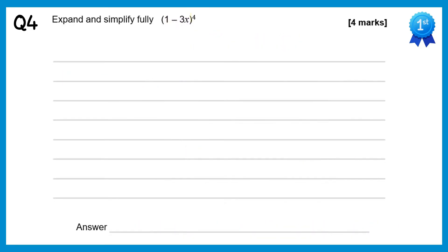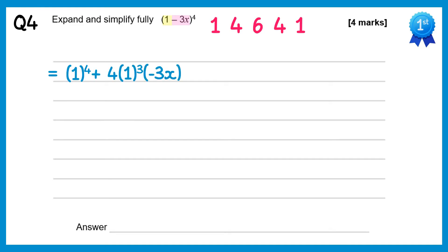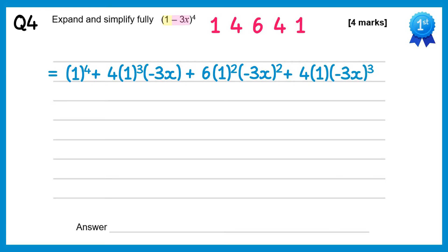For this question we have a bracket to the power 4, so we need the fourth row of Pascal's triangle: 1 4 6 4 1. We have an a value of 1 and b is negative 3x. So we start with 1 to the power 4, then plus 4 lots of 1 cubed times negative 3x, and so on to the final term negative 3x to the power 4.